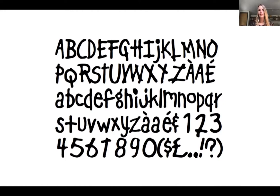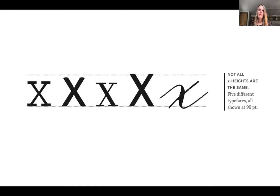Not all letters are the same across typefaces. Shown here are all the same point size but different typefaces — you can see they all sit on the same baseline but have different heights. Type with a taller x-height is actually a little easier to read on screens, as it gives more character definition when small. X-height refers to the height of lowercase letters — the taller those lowercase letters, the more variation in letterform at small sizes. More detail about x-height is in the book.